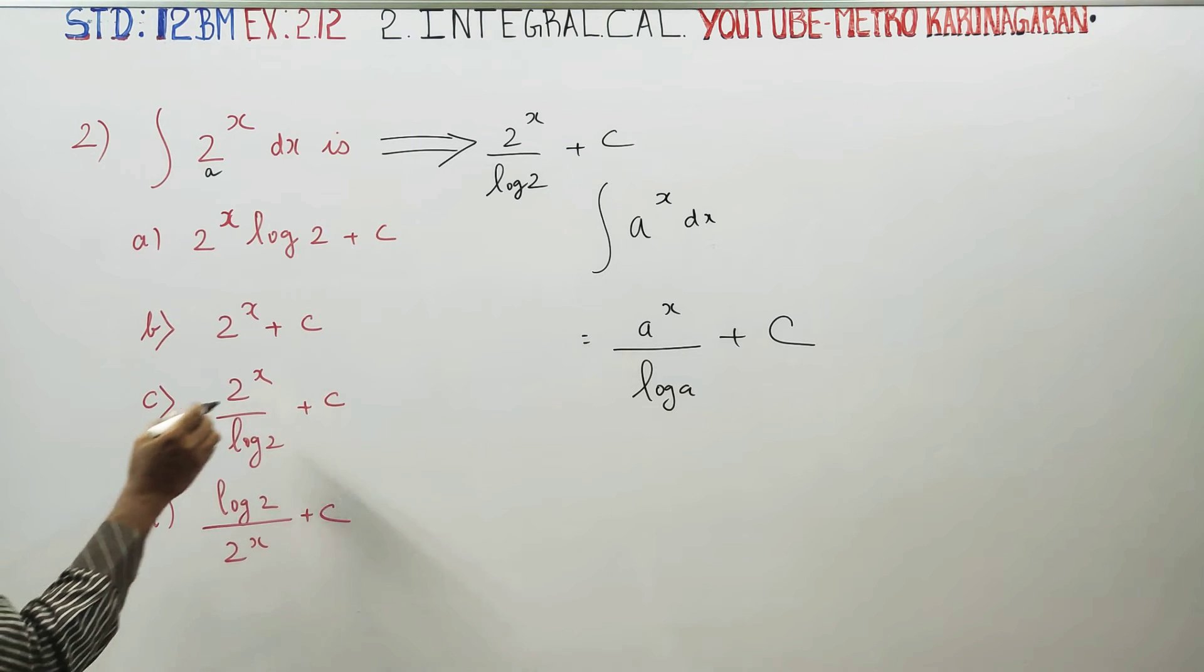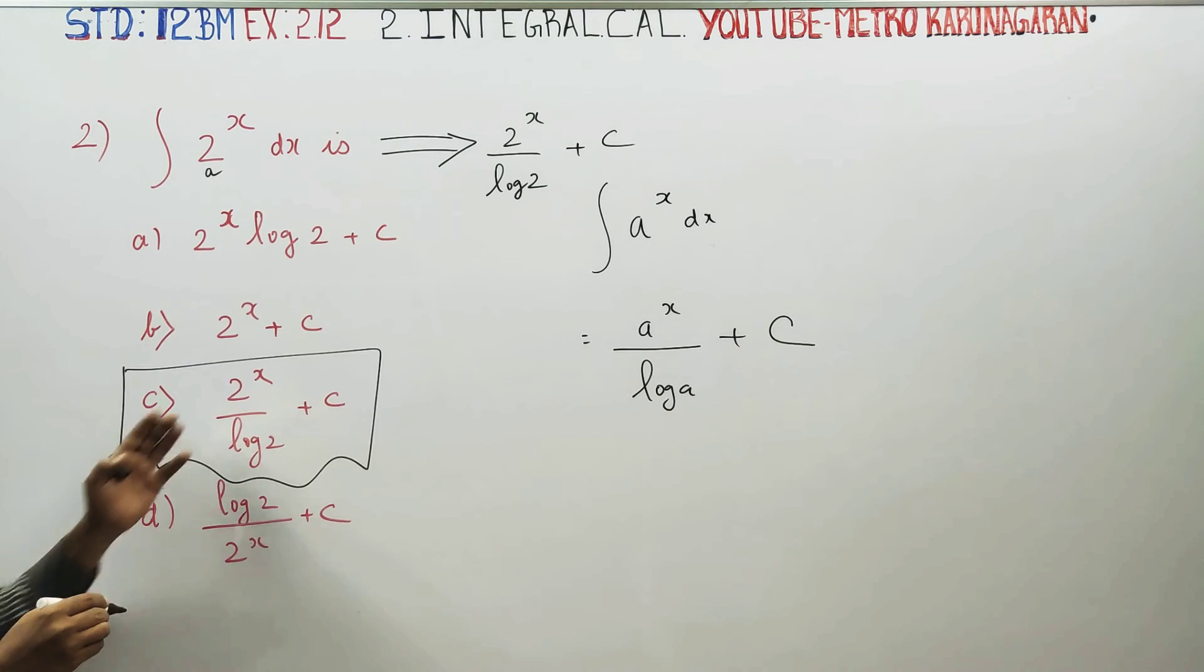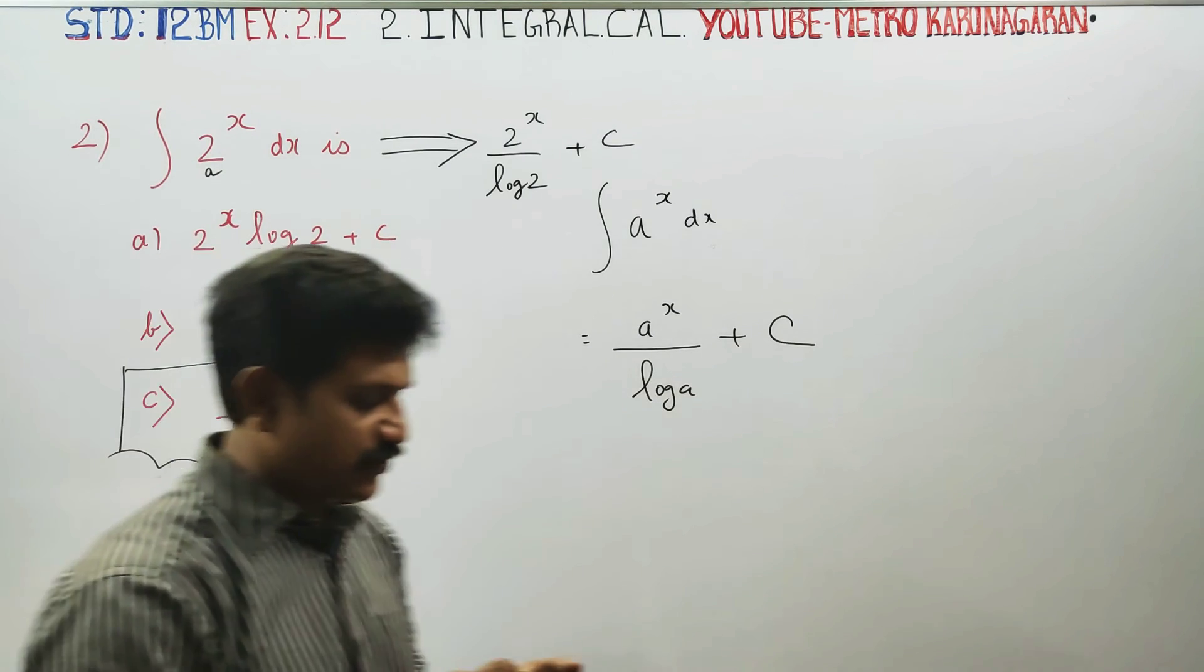If you look at the best option, you can see option b: 2 power x by log 2 plus c. This is the answer.